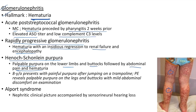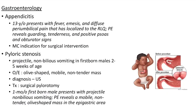HSP clinical case: 8-year-old presents with painful purpura after jumping on a trampoline. Physical examination reveals palpable purpura on the legs and buttocks with mild abdominal discomfort. In Alport syndrome there is a nephritic clinical picture accompanied by sensorineural hearing loss.